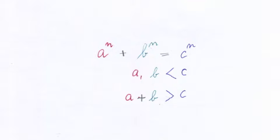Wiles and Taylor also showed that Fermat's formula could not have a solution if a, b, c, and n are rational numbers. Three numbers form a triangle if the sum of the two smaller ones is larger than the largest of them. For Fermat's formula, this must be the case, which you can easily see from an example.